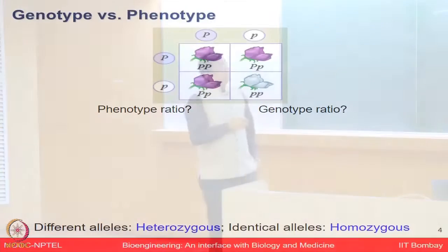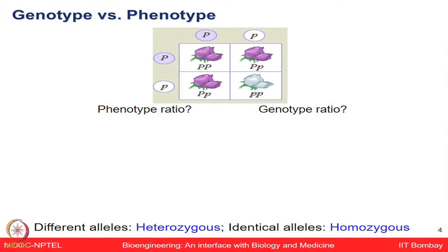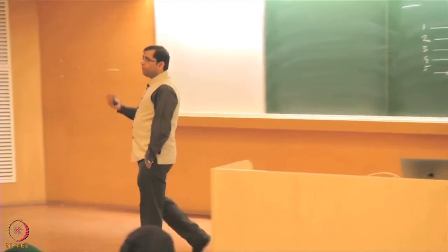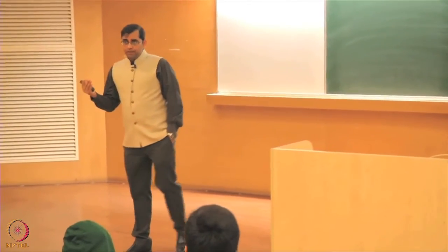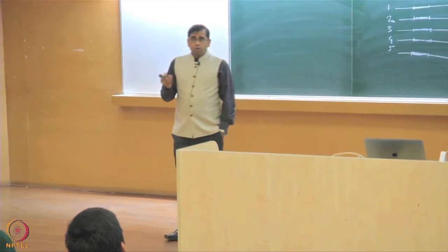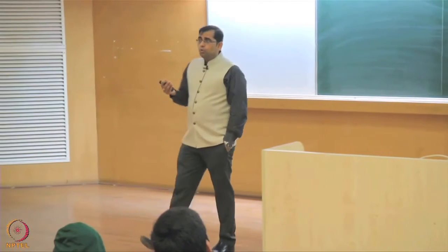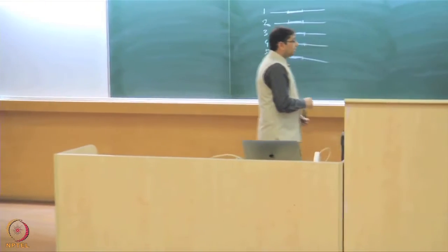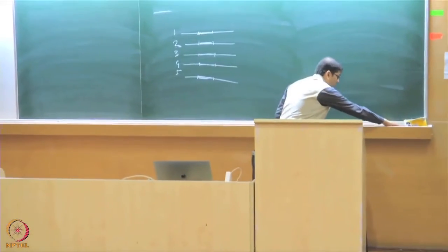Consider a flower shown here that is purple colored. A gene coding for it with dominant interest is denoted as capital P, and the recessive form is small p. Let's familiarize ourselves with the terminologies: dominant, recessive, homozygous, heterozygous. Let's do a Punnett square cross to understand these terms.